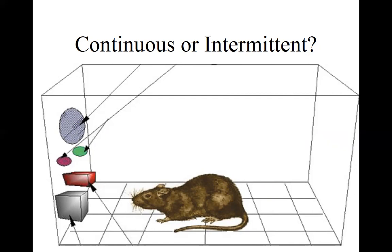However, one of the technologies of the Skinner box is that the researcher can set reinforcement to be intermittent on a ratio or interval schedule, either fixed or variable. So the researcher may decide that we're not going to reinforce every correct response, but only some according to the schedule selected.